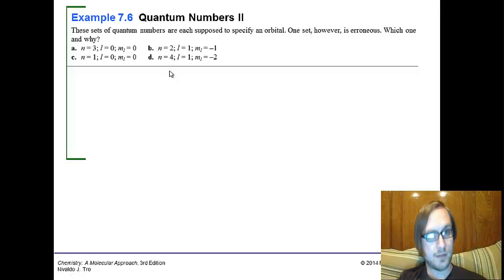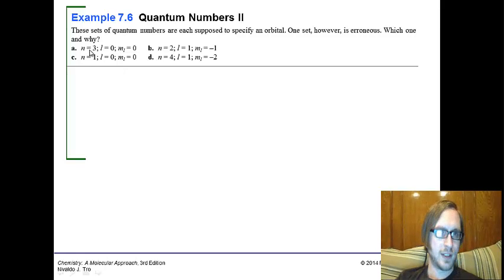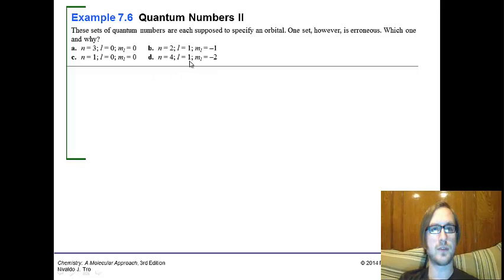Let's look at the l's. The l's start at 0 and count up to n minus 1. So that means for n equals 3, we could have 0, 1, or 2. That's fine. For n equals 2, we could have 0 or 1. That's fine. For n equals 1, we could have just 0, which we do. For n=4, we could have 0, 1, 2, or 3. Okay, so the l's are good. So we're expecting a problem with one of these ml's.